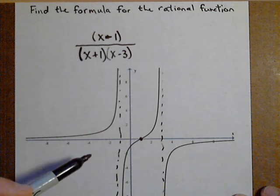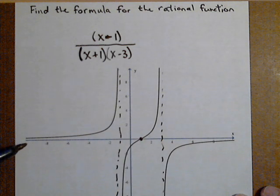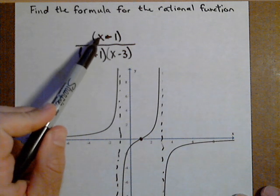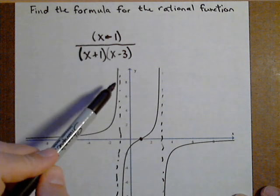Next thing we want to check is for a horizontal asymptote. We clearly have one at zero, so we want the degree of the denominator to be larger than the numerator, which is what we have so far. So far everything is looking really good.